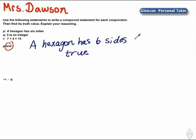Now we're looking at the and. P and R. The statement for R is seven plus four equals fifteen. However, this statement is false.